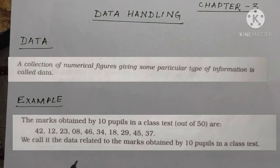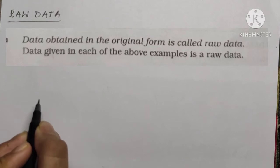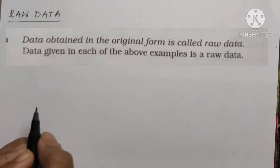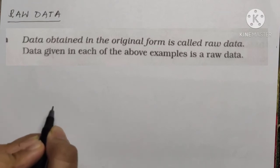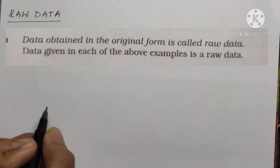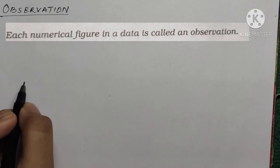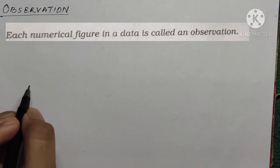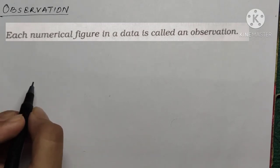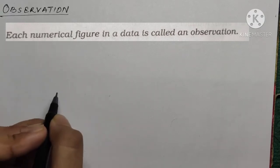Raw data means data obtained in the original form is called raw data. The data given in the above example is raw data. An observation means each numerical figure in the data is called an observation. Each numerical observation forms the raw data.